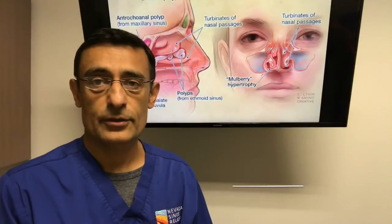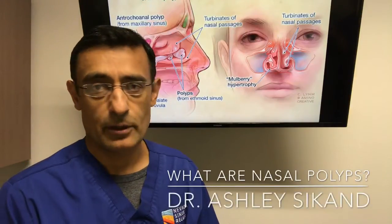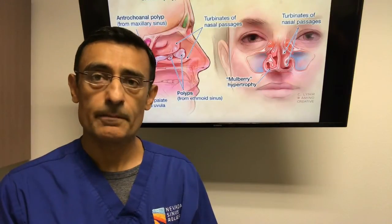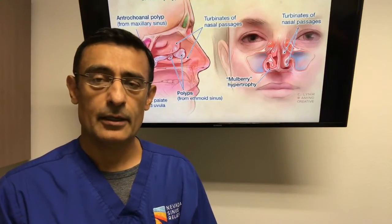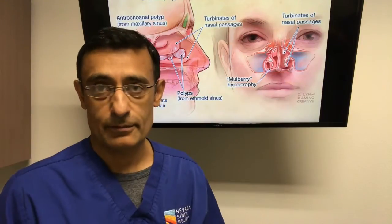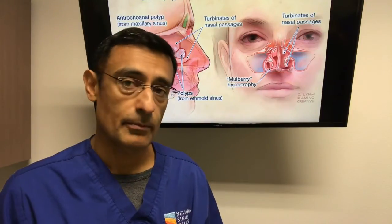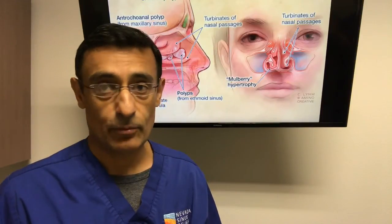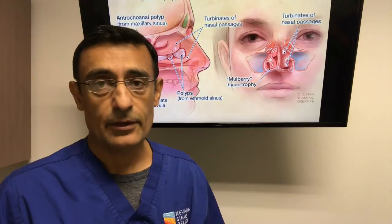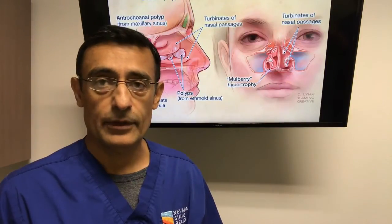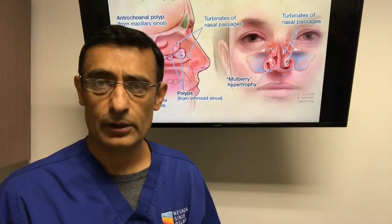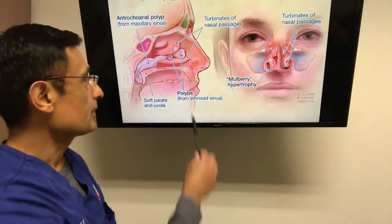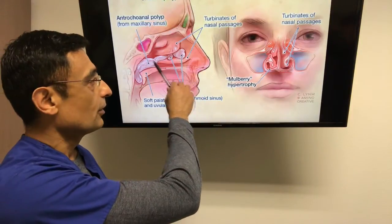A common problem for patients who suffer from allergies or sinus infections is the development of nasal or sinus polyps. Polyps in the nose form due to inflammation from allergies or infection, which causes swelling of the mucous membrane that lines the sinuses in the nose. This results in the development of polyps, which kind of look like grapes — they're fairly soft, and as demonstrated in the picture behind me, they occur in the nose as well as the sinus area.